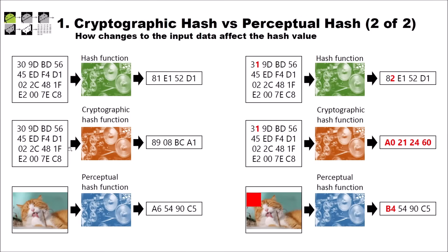On the next slide we see examples of how the output of the hash function differs when we change the input data. With a normal hash function, changing one bit may only change a single position in the output. With a cryptographic hash function, changing a single bit causes on average half of the bits to change, so the output is completely different. With a perceptual hash function, when we add a red rectangle to a corner of a cat image, only the start of the hash value changes — the remaining part is the same. This can be used to search a database for similar images.